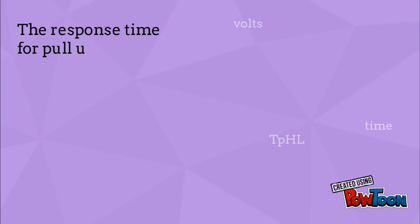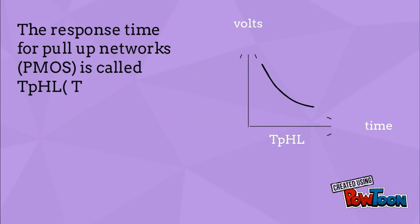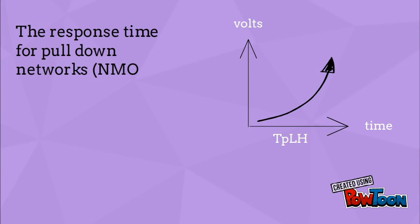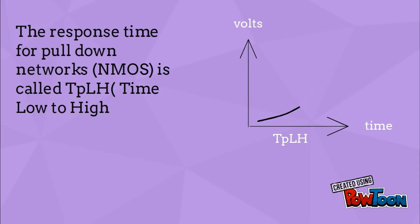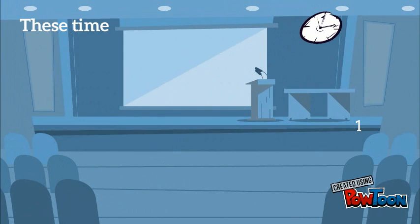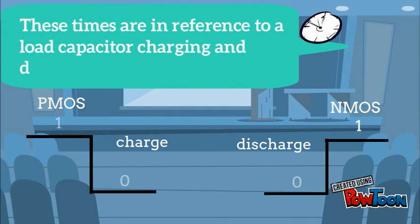The response time for pull-up networks (PMOS) is called TPHL — time high to low. The response time for pull-down networks (NMOS) is called TPLH — time low to high. These times are in reference to a load capacitor charging and discharging through the device.